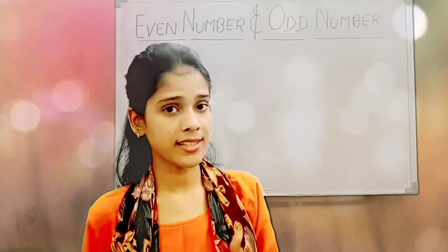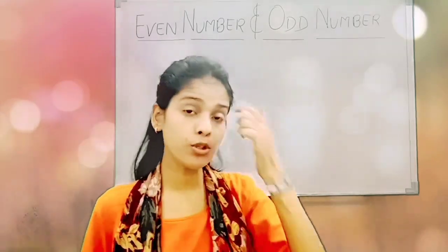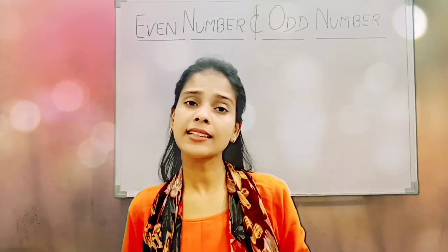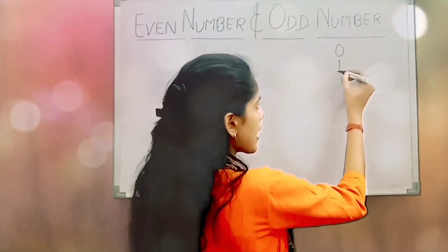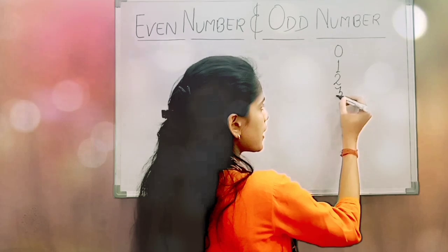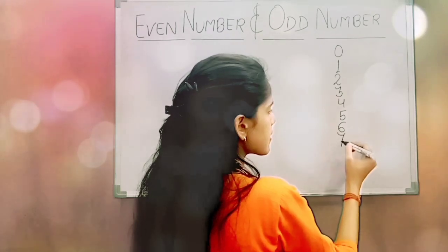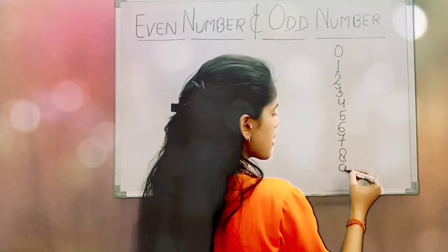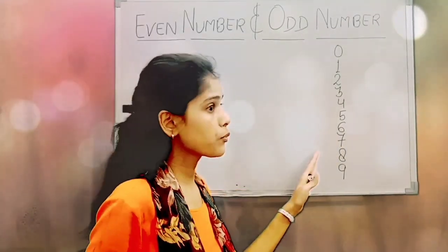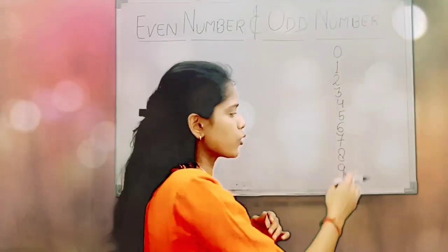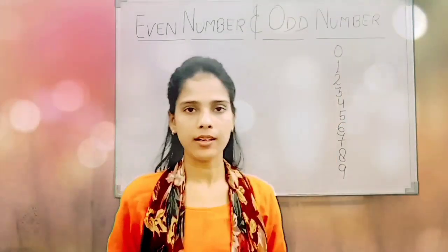So before starting the concept of even number and odd number, can you tell me the counting numbers from 0 to 9? So let's see what are counting numbers. That is 0, 1, 2, 3, 4, 5, 6, 7, 8, 9. Right? So now you can tell me why we have to learn about the counting numbers from 0 to 9 — because this is related with even number and odd number.